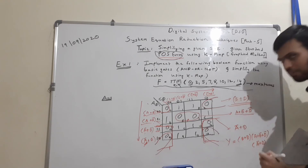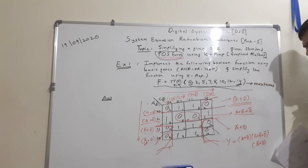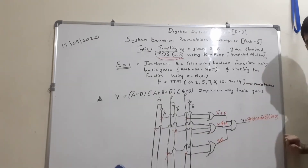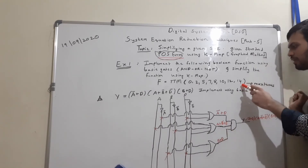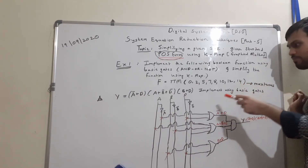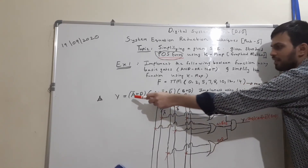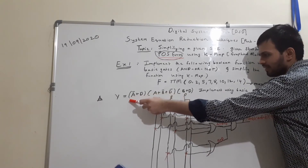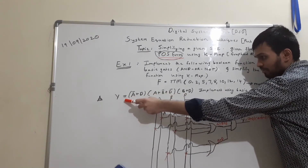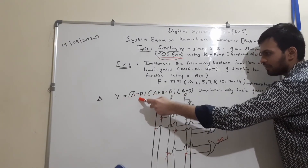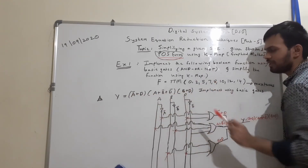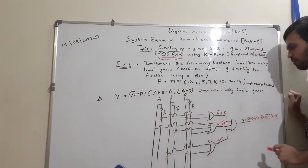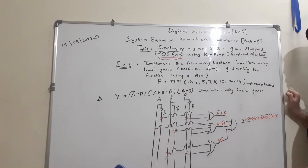So the final answer is: Y = (B+D)(A+B̄+D̄)(Ā+D). We have simplified this Boolean function using KMAP, and the minimized expression is in POS form.